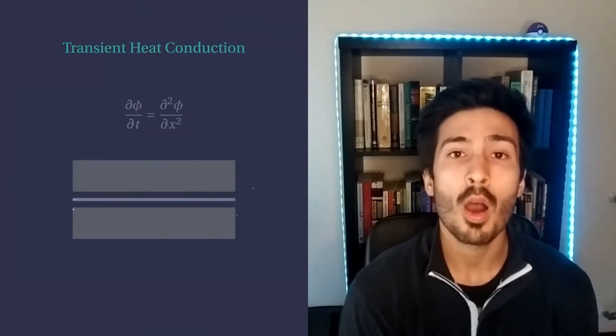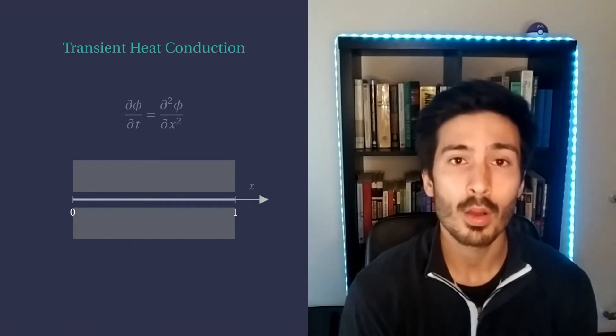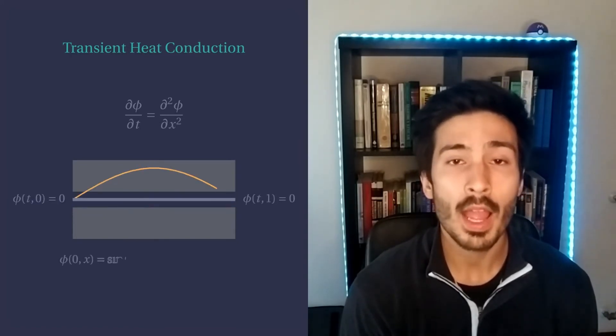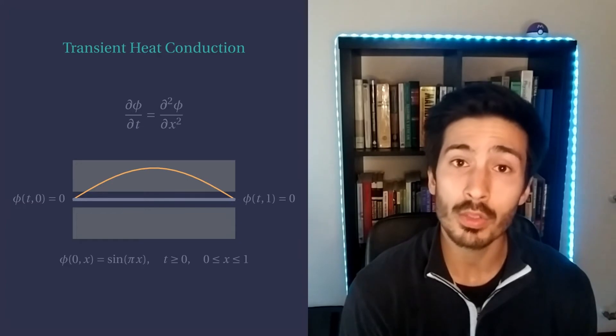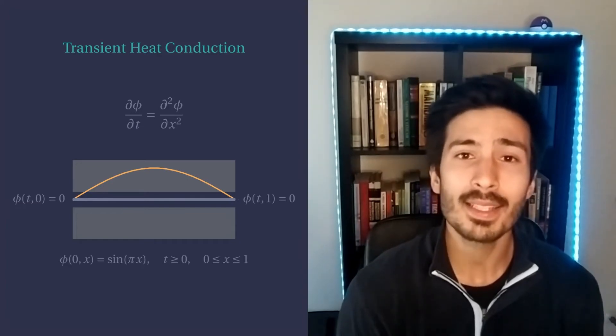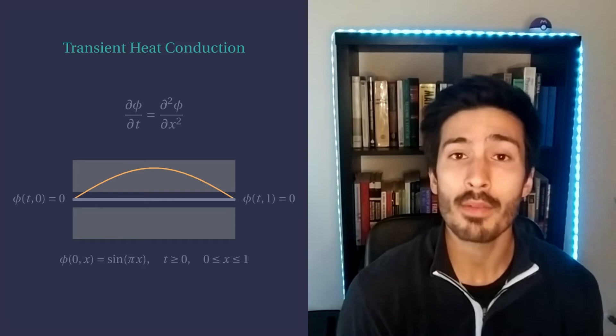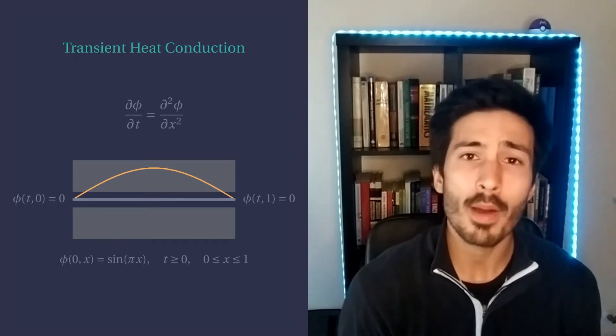Now let's consider the transient heat equation solved on a bar of length 1. We know the initial distribution of temperature across the bar and also the temperature of the boundaries at all times. These are the so-called initial condition and boundary conditions of the problem. Sure, it is slightly different from the problem we have solved before, but what about it?